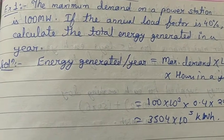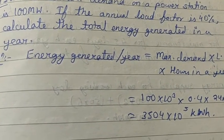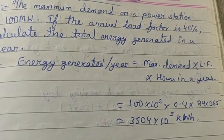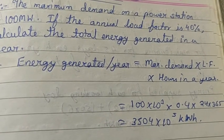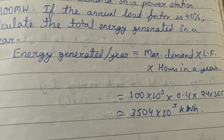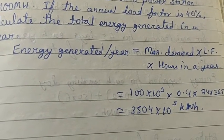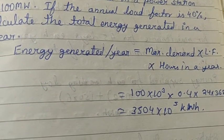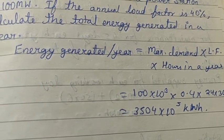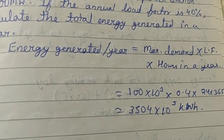Total energy generated in a year — the formula is: maximum demand × load factor of that power plant × hours in a year. In one year, there are 24 hours in a day and 365 days, so 24 × 365 gives the total hours in a year.